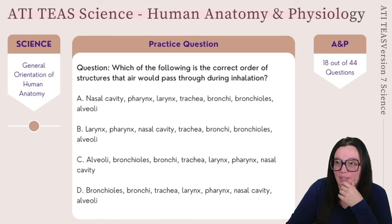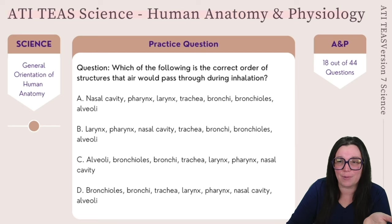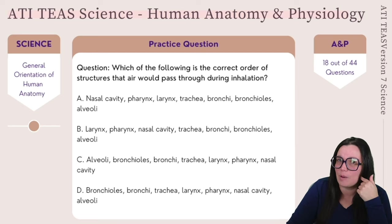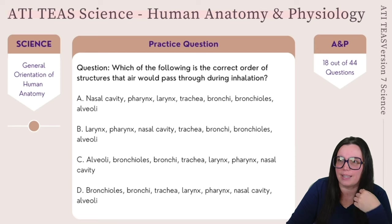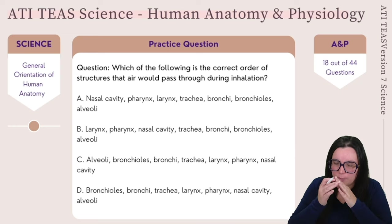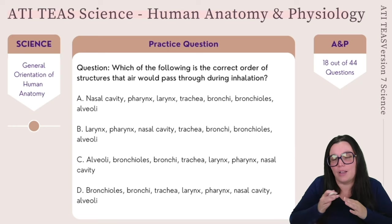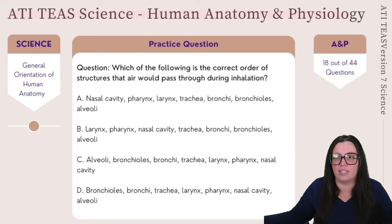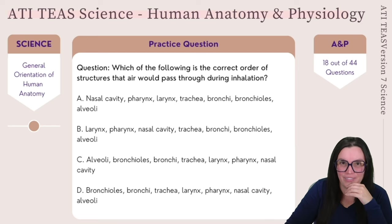Based on the answers we have here, the correct answer is going to be A: nasal cavity, pharynx, larynx, trachea, bronchi on the left and right, further branching into bronchioles, and thus ending in the alveoli.